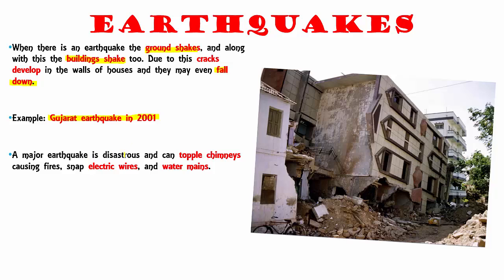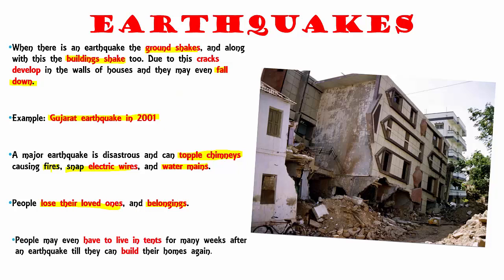A major earthquake is disastrous and it can lead to toppling down of chimneys. If the chimneys topple, it could lead to fire accidents, snap electric wires, and even break water mains. People may even lose their loved ones, their own lives, or their belongings due to an earthquake. People even have to live in tents for many weeks after an earthquake till they can build their homes.